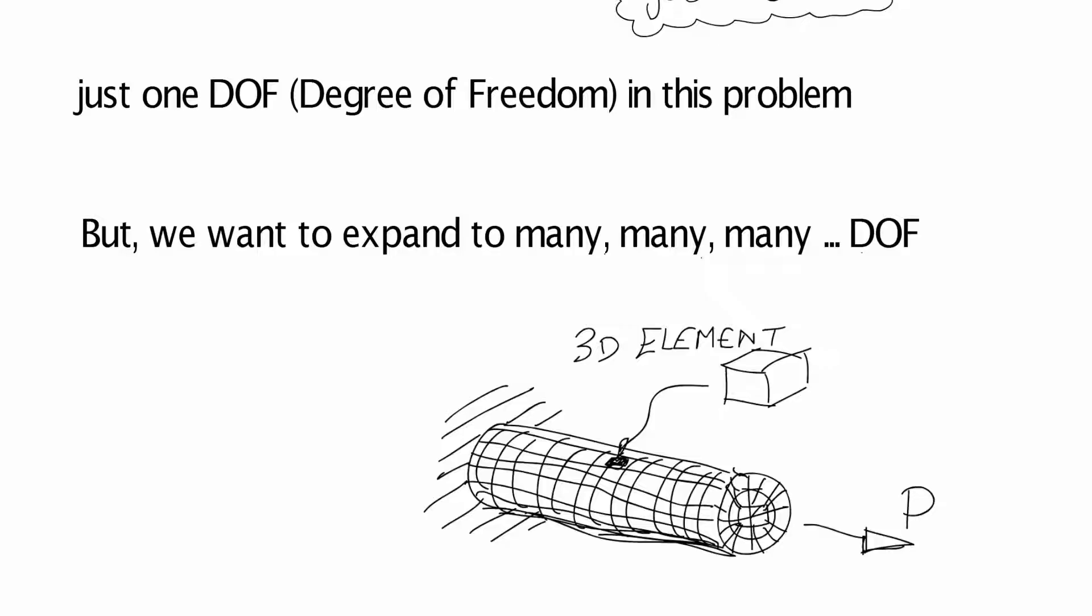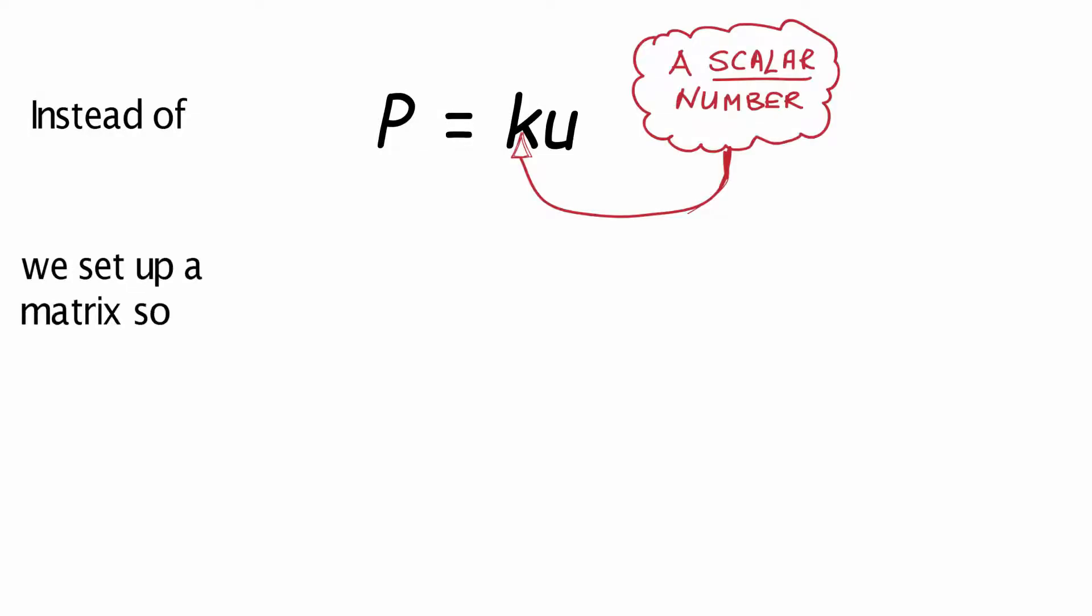We want to expand this method to many, many degrees of freedom. Imagine another rod component modeled with solid elements. It might be 10,000 degrees of freedom here. So instead of P equals K times U, where we're solving for single scalar numbers, we want to solve for a system of equations.